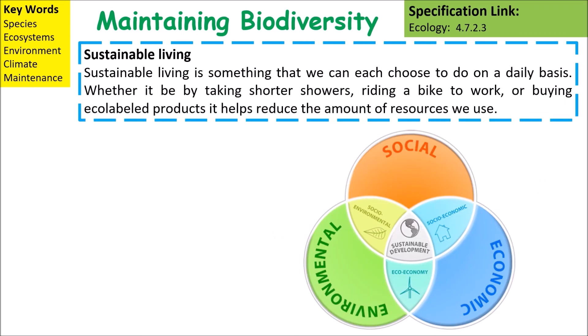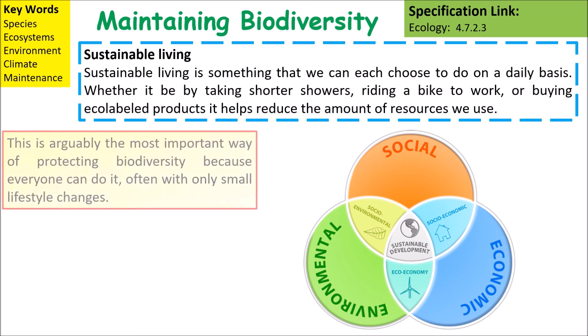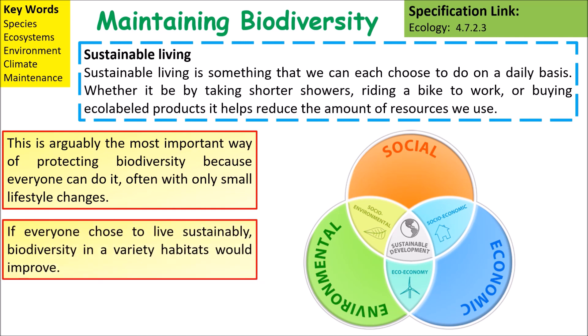Sustainable living is something each of us can choose to do on a daily basis. Whether it is by taking shorter showers, riding a bike to work, or buying eco-labelled products, it helps reduce the amount of resources we use. This is arguably the most important way of protecting biodiversity because everyone can do it, often with only small lifestyle changes. If everyone chose to live sustainably, biodiversity in a variety of habitats would improve.